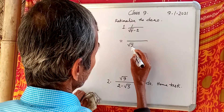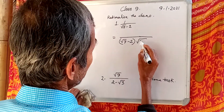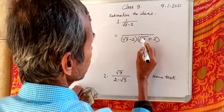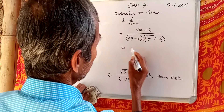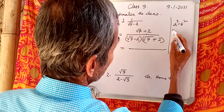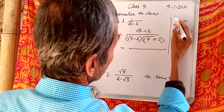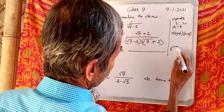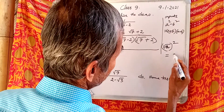Rationalize 1 over root 7 plus 2. We use the identity a squared minus b squared equals a plus b into a minus b, and the property that root a whole square equals a.